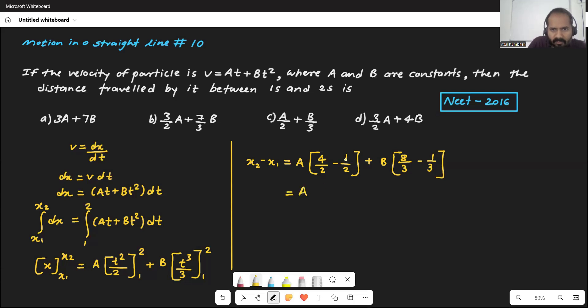Alright, so it will be 4 minus 1, 3 by 2. 3 by 2 plus your B into 8 minus 1, 7 by 3. So, and that x₂ minus x₁ which means Δx, right? Like change in displacement. Change in actually that position. So you will get the 3/2 A plus 7/3 B. That's what here. Like that distance traveled between 1 and 2 seconds.